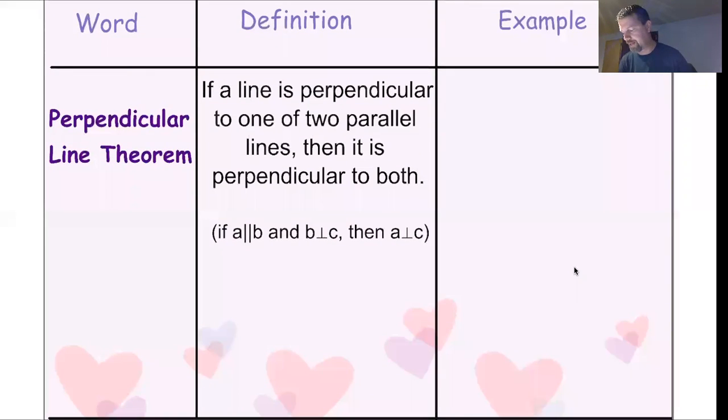Last one. If a line is perpendicular to one of two parallel lines, then it's perpendicular to both. So let's draw a sketch of this. Here A is parallel to B. So here's A and B, both parallel to each other. So those are my parallel marks. And I know B is perpendicular to C, so that means it forms 90 degrees. So I know this is 90. Then my conclusion is A must be perpendicular to C. Well, that seems clear. If I'm perpendicular here and the lines are parallel, I'm also going to be perpendicular there. That's today's stuff.